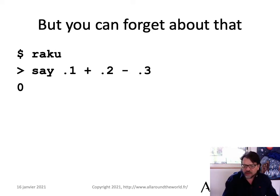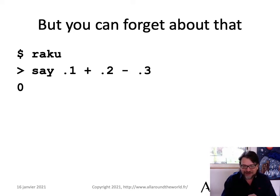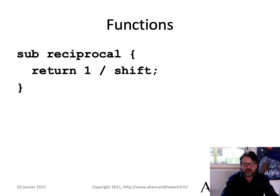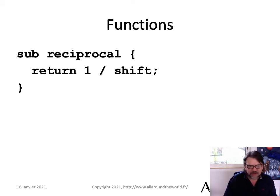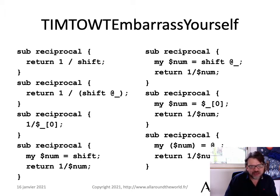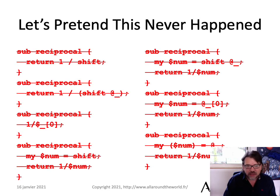Let's look at functions, or subroutines. Here we have a reciprocal function — 1 divided by the argument. Nobody would actually write a reciprocal function; it's silly, but it's easy to show. What would that look like in Perl? This is actually valid Raku, but in Perl you can write it as `1/shift`, `1/$_[0]`, `1/shift` with an underscore — you can write it all these different ways. This is horrifying. This is one of the problems with Perl, which has been such a shame.